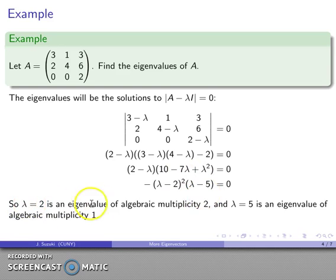And so we say that lambda equals 2 is an eigenvalue of algebraic multiplicity 2, lambda equals 5 is an eigenvalue of algebraic multiplicity 1.